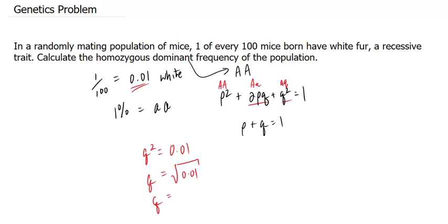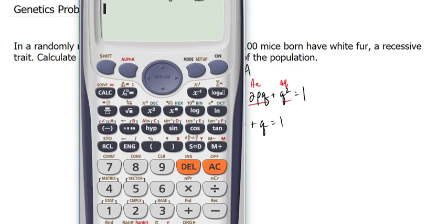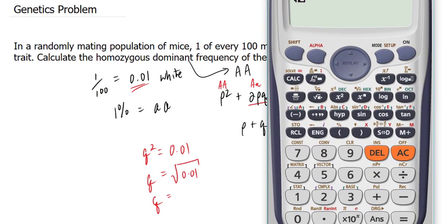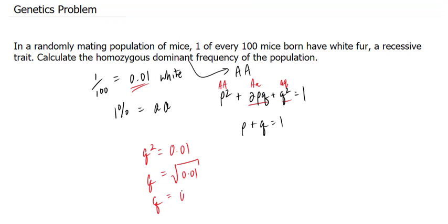And if we solve for q by square rooting both sides, we end up with the following number. Let's use our calculator for this. Square root of 0.01, and that equals a perfect 0.1.